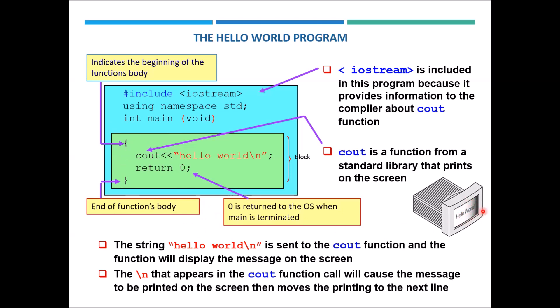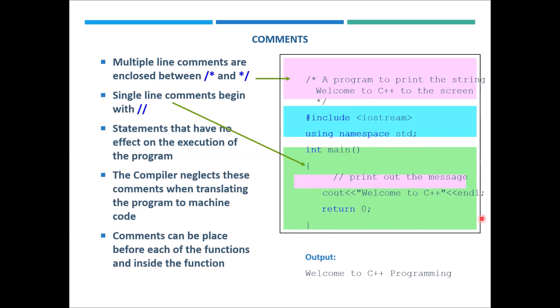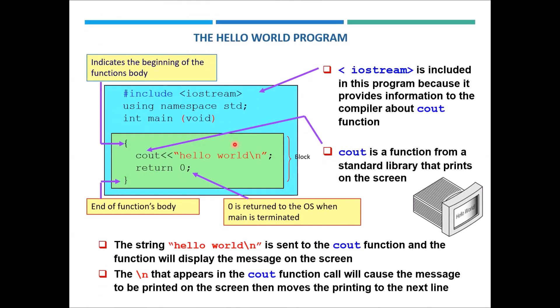The cout statement prints 'hello world' on the output screen. After that we have 'return 0', which terminates the program and frees the resources such as memory and computation used. An important thing is backslash-n, which is an escape sequence meaning the cursor will shift to the next line. Instead of using 'endl', we can use '\n' to move the cursor to the next line.